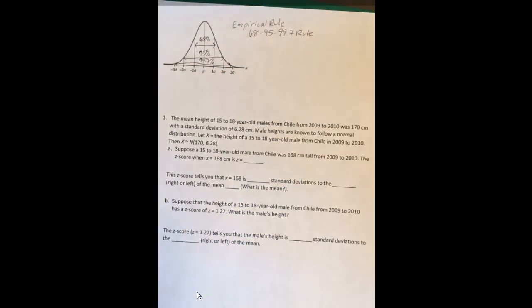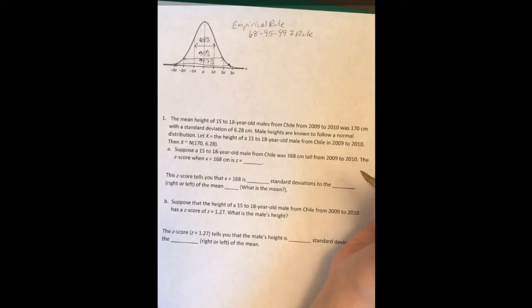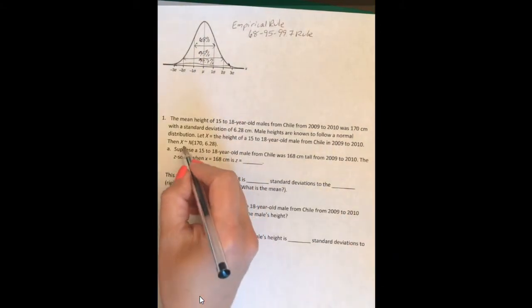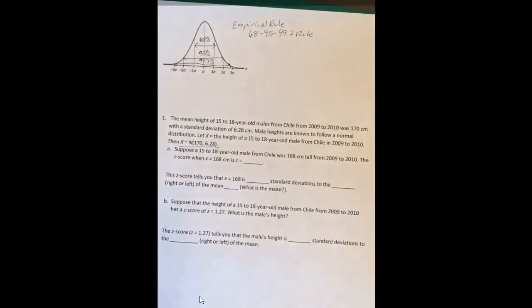So let's go ahead and solve some problems. Number one, the mean height of 15 to 18-year-old males from Chile from 2009 to 2010 was 170 centimeters with a standard deviation of 6.28 centimeters. Male heights are known to follow a normal distribution. Let x equal the height of a 15 to 18-year-old male from Chile in 2009 to 2010.